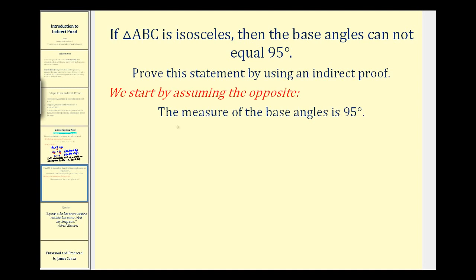So let's see if we can contradict this statement. Well, if the base angles measure ninety-five degrees, the sum of the base angles would be ninety-five degrees plus ninety-five degrees, which is equal to one hundred ninety degrees.